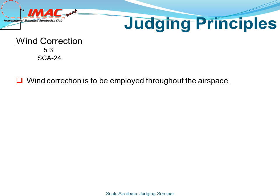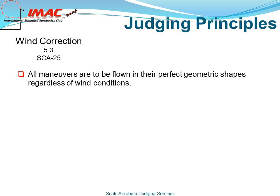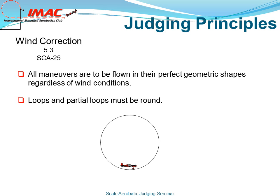Wind correcting is to be employed throughout the airspace. All maneuvers are to be flown in their perfect geometric shapes regardless of wind conditions. Loops and part loops must be round. To maintain a round loop, one would pitch into the wind or pitch out of the wind to maintain a perfect geometric shape.